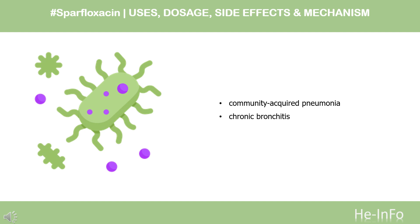What is sparfloxacin used for? For the treatment of adults with the following infections caused by susceptible strains of microorganisms: community-acquired pneumonia caused by Chlamydia pneumoniae, Haemophilus influenzae, Haemophilus parainfluenzae, Moraxella catarrhalis, Mycoplasma pneumoniae, or Streptococcus pneumoniae;